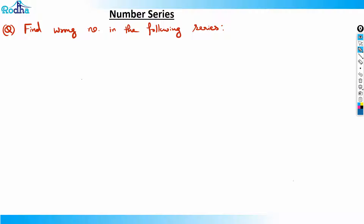There is only one wrong number in each series. For example, we have the series: 6, 26, 51, 86, and 317. You need to find which is the wrong number. Think about it for a moment. To understand the pattern here, this is a kind of series you should actually know.